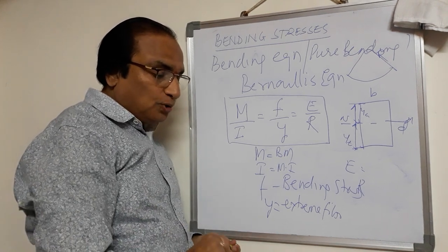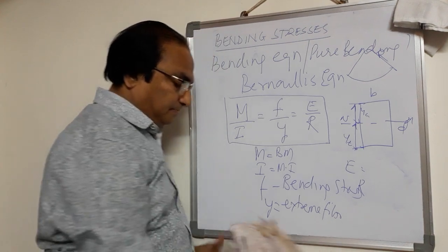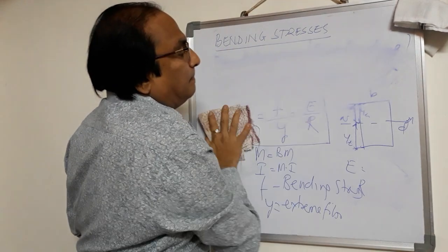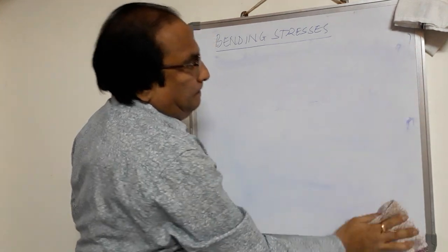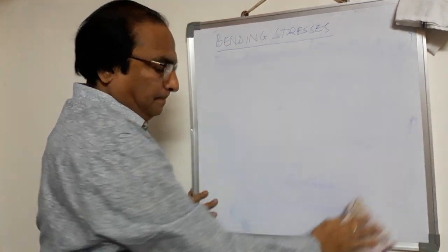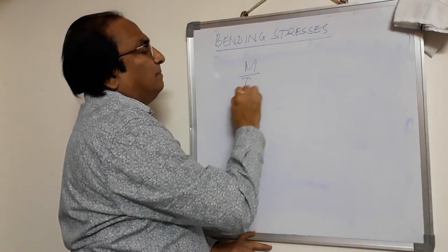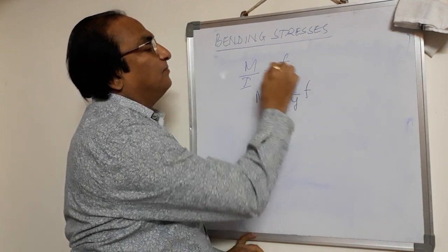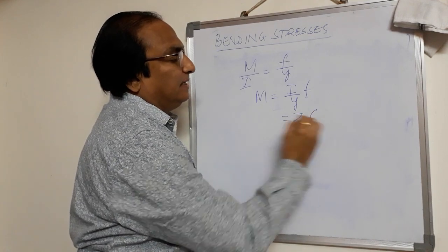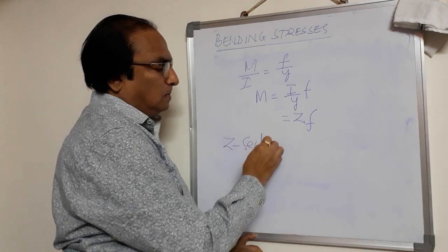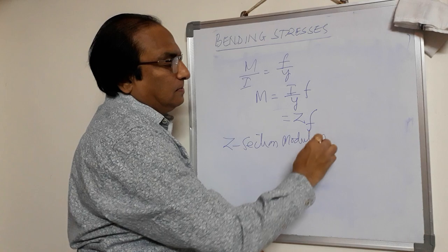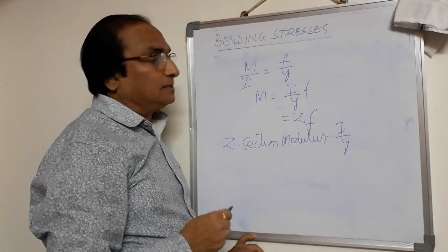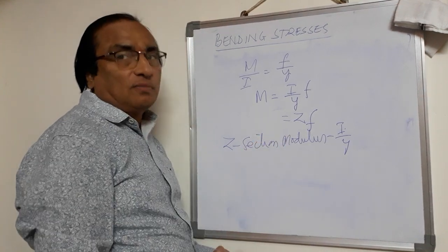Today we will see how to use these equations to draw the bending stress diagrams. M/I = F/Y = E/R. If we use the relation M/I = F/Y, then M = (I/Y) × F. This I call Z × F, where Z is known as the section modulus. Section modulus is nothing but I/Y — I is the moment of inertia and Y is the distance of the extreme fibre from the neutral axis.